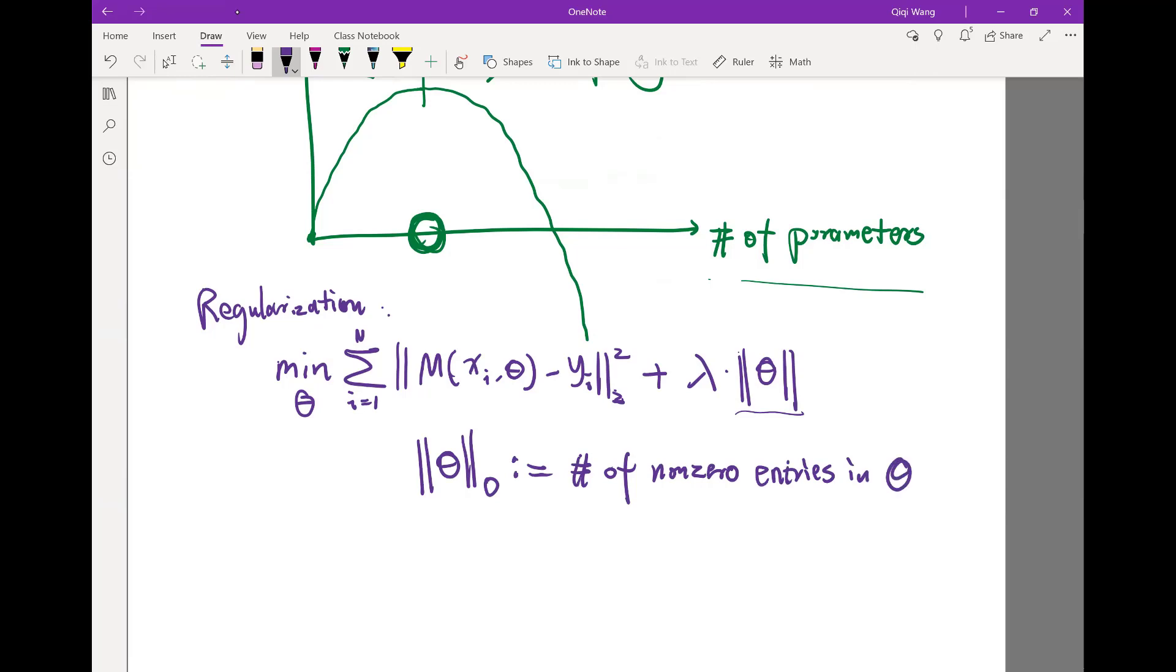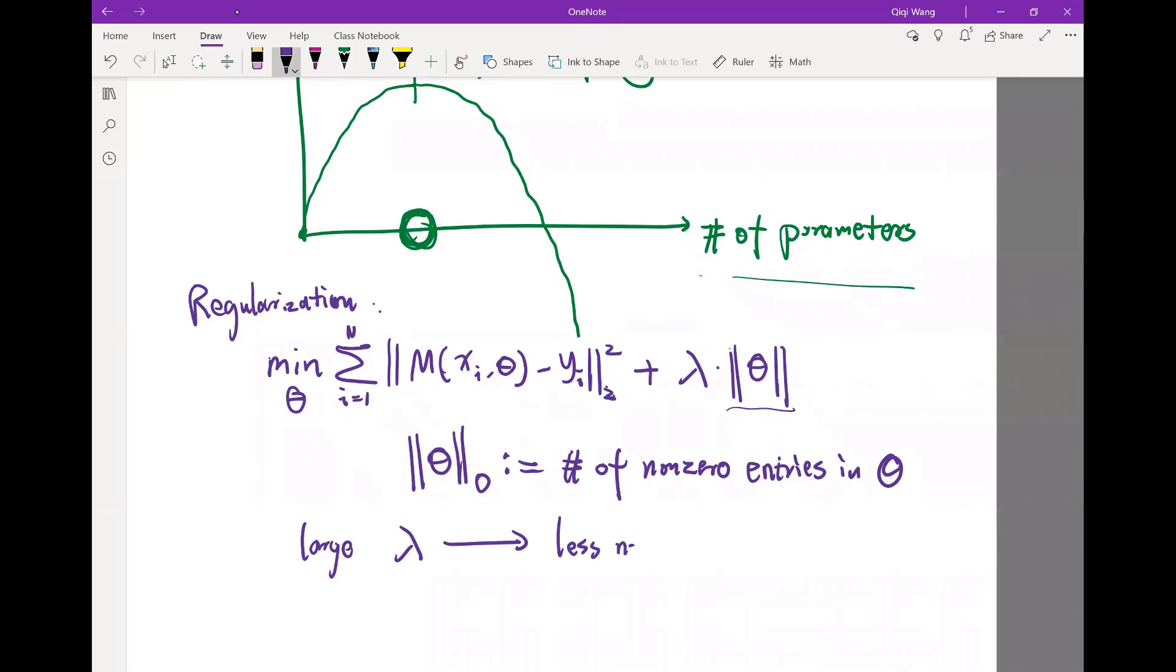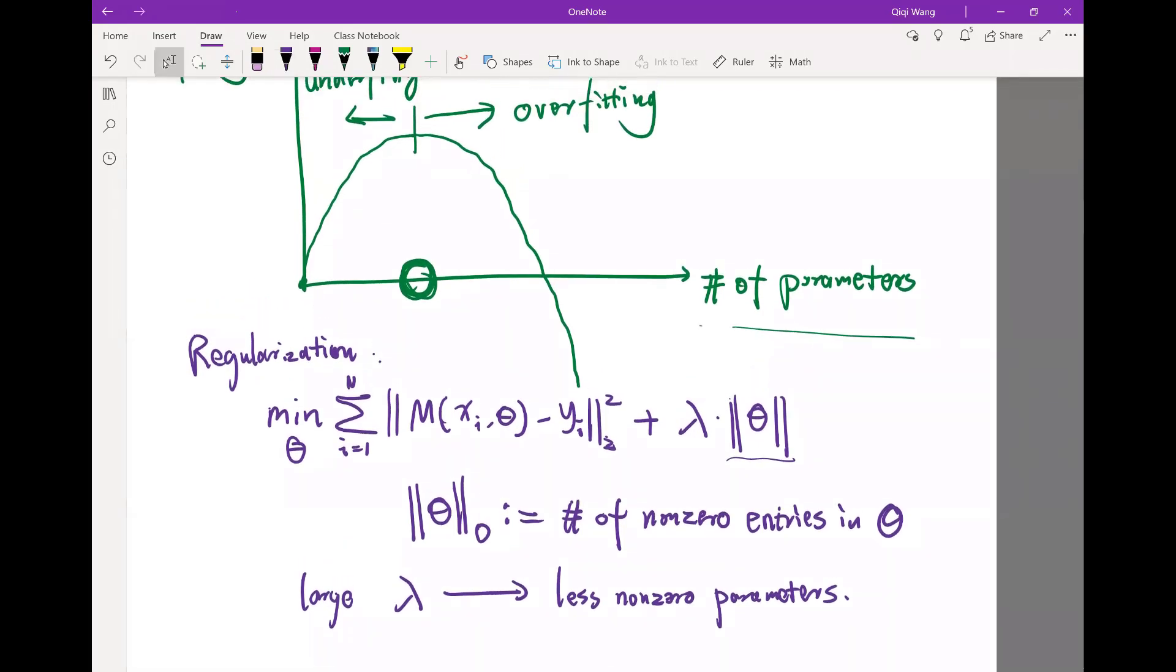This is equivalent of saying I want a model that has as few nonzero parameters as possible. Which means if I have a large lambda, it leads to less effective nonzero parameters. It achieves a very similar effect as just to force the model to have fewer parameters.